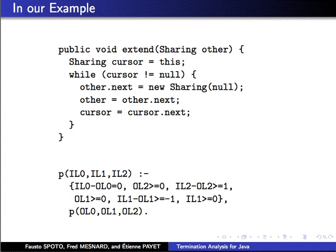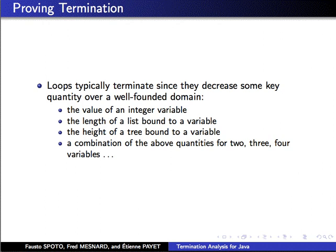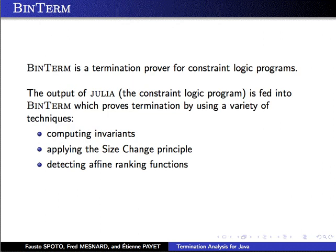So now the problem is: how do we prove termination of our constraint logic programs? This has been studied for many years, and the idea is that you have to find some measure decreasing over a well-founded domain. This measure can be the value of an integer variable, the length of a list, the height of a tree, the size of a data structure, or in general a combination of many of those measures. In particular, we use a tool called BinTerm to prove termination of a constraint logic program. By mixing Julia with BinTerm, what we get is an analyzer which computes invariants on loops, applies the size change principle, detects affine ranking functions, and finally proves the termination of most of the methods of your programs.